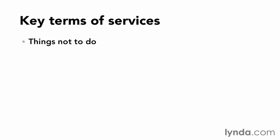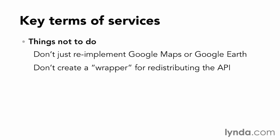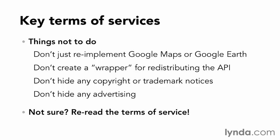Here are some things you should not do. You can't just reimplement Google Maps or Google Earth and create your own versions of these applications — the API is designed to add maps to other applications, not replace the existing ones. You're also very specifically forbidden from creating point-to-point direction applications that might be used to replace the Google version. You can't create just a wrapper to redistribute the API; it's free for download from Google directly, and you shouldn't redistribute it other than as part of your unique application. Don't hide any copyright or trademark notices, and don't hide any advertising. If you're not sure whether your app follows these rules, re-read the Terms of Service and get advice where needed.